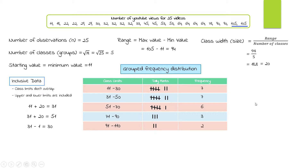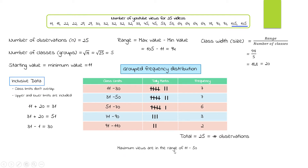The frequencies are 7, 7, 6, 3, and 2. When we add the total observations we must get back 25, and we do. Can we draw conclusions? Yes — the maximum views fall in the first two rows, so maximum views are in the range of 11 through 50. The grouped distribution gives us much more insight than the ungrouped one did.